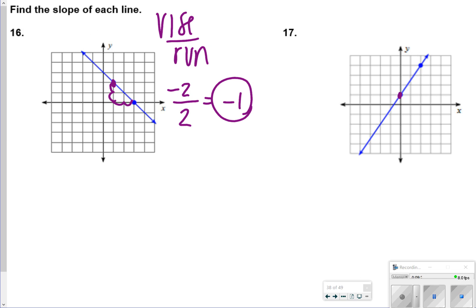For number 17 though, I'm starting down here. I have to rise 1, 2, 3. And run 1, 2. And that one's a positive. So I'll have positive 3 over 2 for my slope.